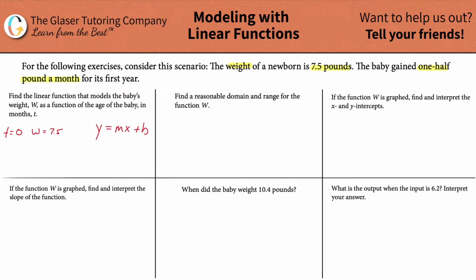How about after one month? Well, it says the baby gains one half pound every single month. So if the baby started at 7.5 pounds and one month passes, that means at one month's time, the weight of the baby has to be 8.0. And then at two months, the baby gains another one half pound, and therefore the baby should be 8.5. And at three months the weight should be 9.0, et cetera.